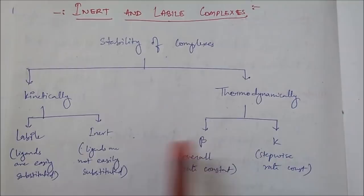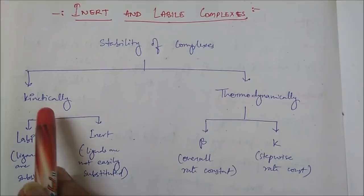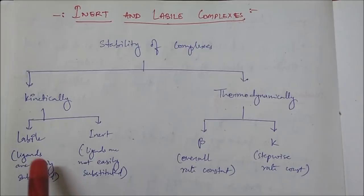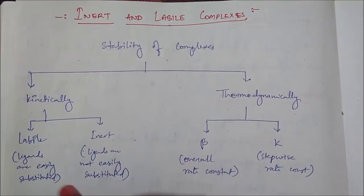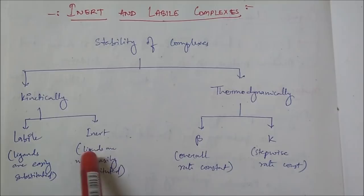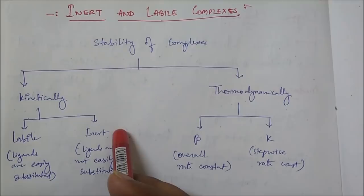We are not going to discuss thermodynamic stability further because inert and labile is a concept that falls under kinetic stability. The kinetic stability of a complex can be described in two forms: labile or inert. Labile means ligands are easily substituted — the complex is easily reactive. If you have an ML6 complex, it can easily react and ligands can be substituted by other ligands.